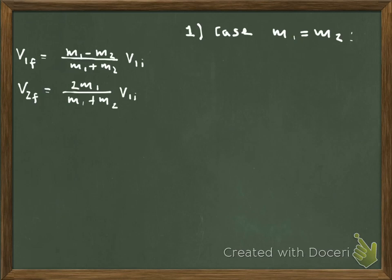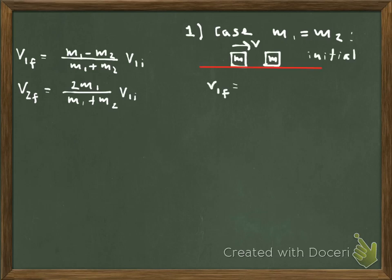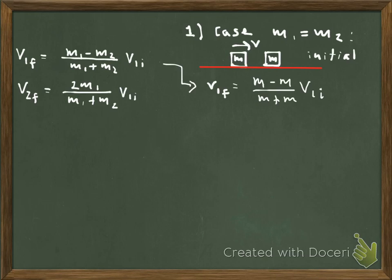Let's examine special cases of these equations. The first case is a collision between two identical masses, where m1 equals m2. For the final velocity of the incoming mass, the numerator becomes m − m and the denominator m + m, so that fraction times v1-initial gives zero. Therefore v1-final equals zero.